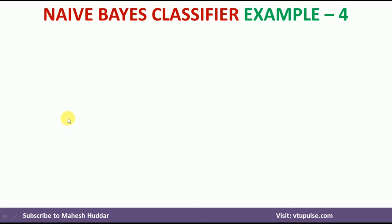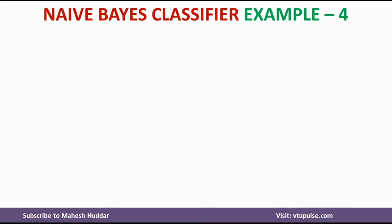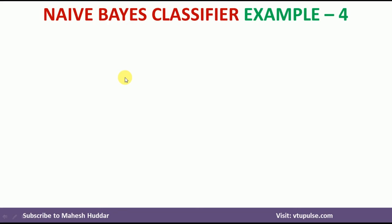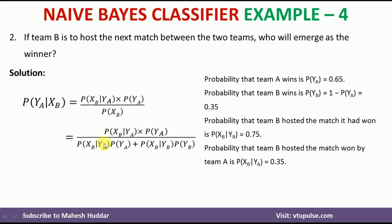For the second question — who will emerge as the winner if team B hosts — we need to calculate two probabilities: the probability that B won given B hosted, and the probability that A won given B hosted, then compare them. We already calculated P(YB | XB) = 0.5357. Now we calculate the probability that A won the match given B hosted it, which equals P(XB | YA) times P(YA) divided by P(XB), where P(XB) equals P(XB | YA) times P(YA) plus P(XB | YB) times P(YB).